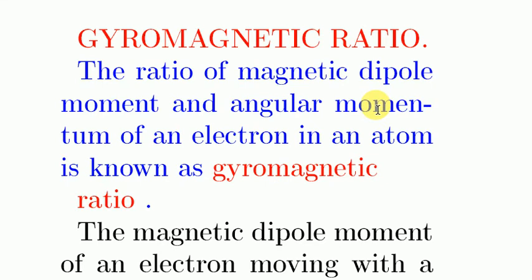The magnetic dipole moment and angular momentum correspond to an electron in an atom. So, gyromagnetic ratio is the ratio of magnetic dipole moment to angular momentum of an electron in an atom.